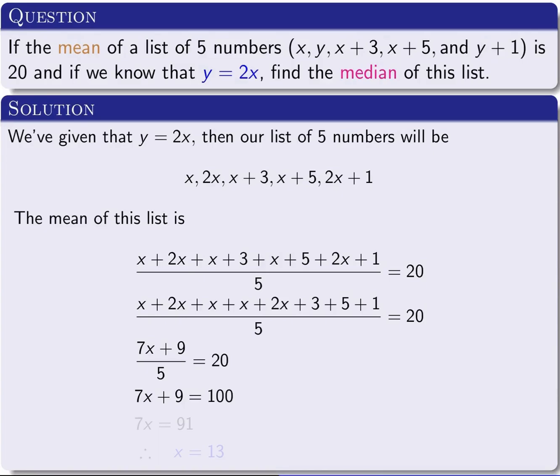7x + 9 = 100, because 5 times 20 is 100. So 7x = 100 - 9, which is 91. Then we divide both sides by 7, so x = 13. Now we need to put 13 back into the list of